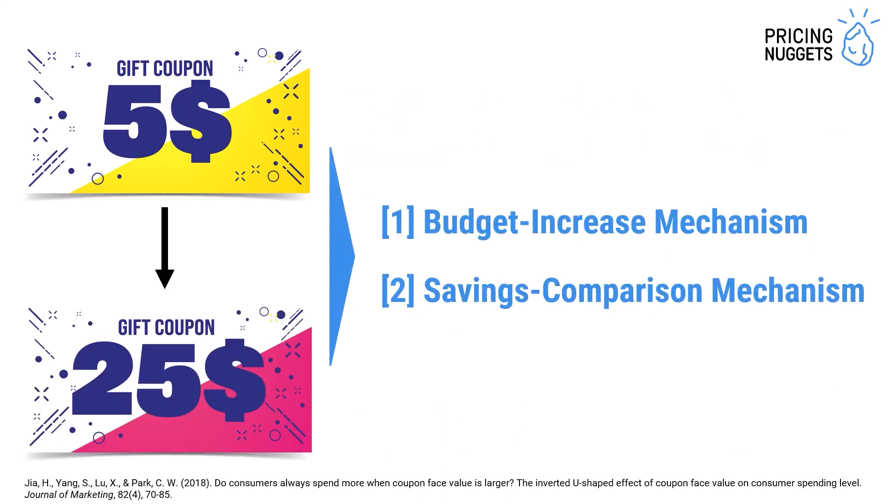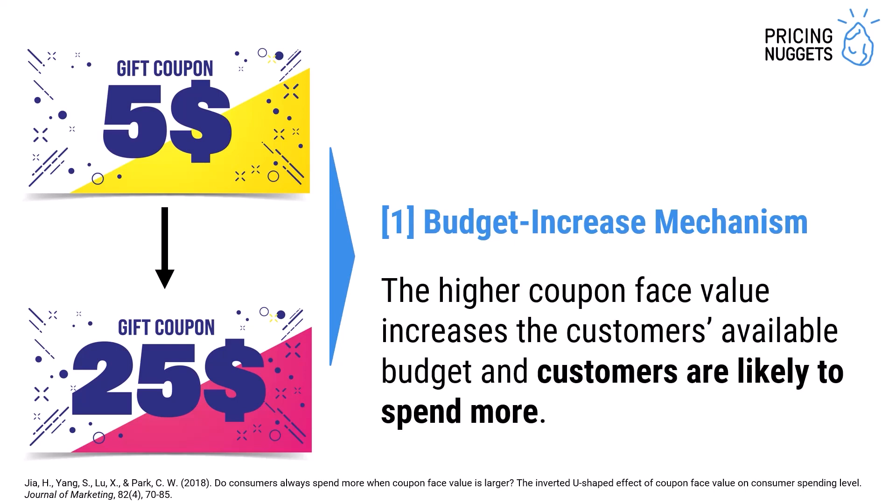What happens if we increase the coupon value from $5 to $25? Two mechanisms kick in. The first mechanism is the budget increase mechanism. And the second mechanism is the savings comparison mechanism. What are they?